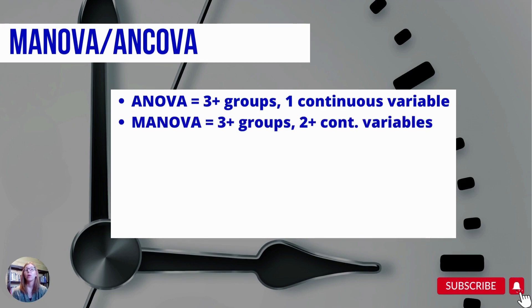For a MANOVA, you would again have three or more groups, and you would have two or more continuous variables. So you could compare a bunch of different groups on a bunch of different variables as long as those variables are continuous.